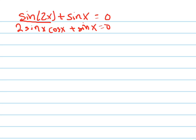Now the reason I had to do that is because now what I can do is factor out a sine from both of these. When I do that, I get sine of x, and what stays here is 2 cosine x, what stays here is 1, and now I can use the zero product property to set this equal to 0 and this equal to 0.